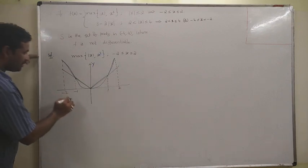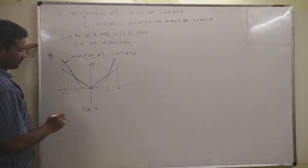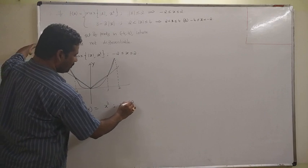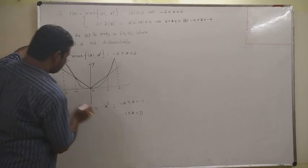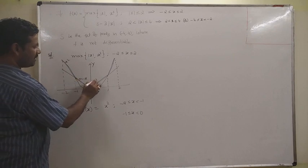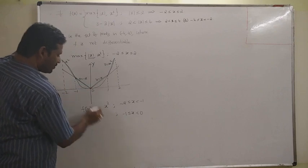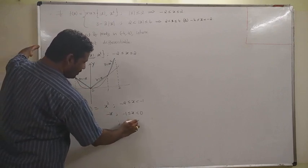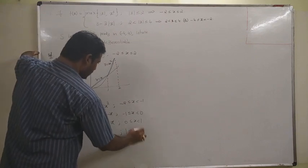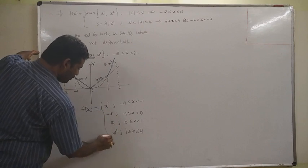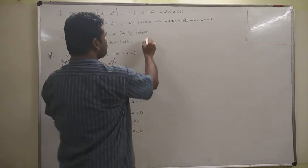Writing the piecewise function for the first part: f of x equals x squared for minus 2 less than or equal to x less than minus 1; minus x for minus 1 less than or equal to x less than 0; x for 0 less than or equal to x less than 1; x squared for 1 less than or equal to x less than or equal to 2. That is the first part of the function.